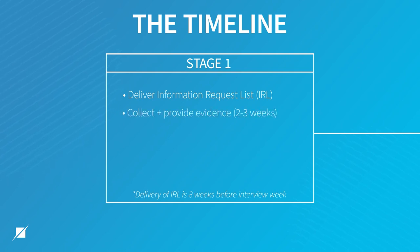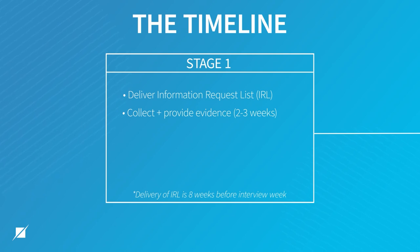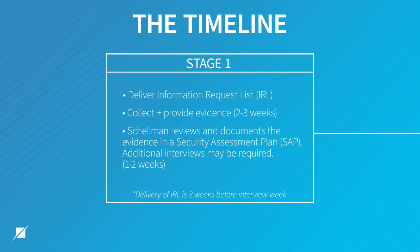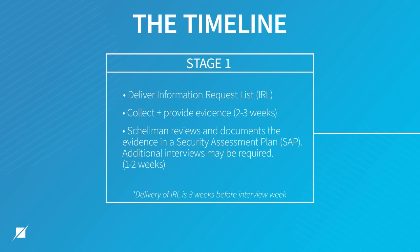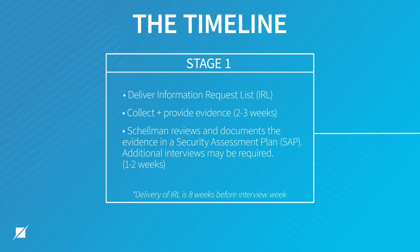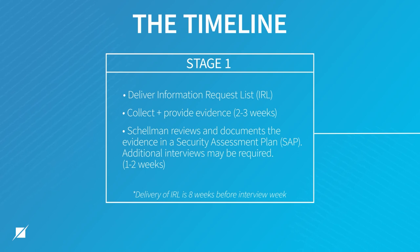There are a few other milestones that happen during stage one. You'll have a two to three week period to collect the evidence we're requesting for stage one and provide that to us. From there, we move into about one to two weeks of reviewing that documentation, documenting it in the security assessment plan or the SAP, and then providing that SAP to you. During that time, we may perform some interviews and authorization boundary reviews to make sure we understand the scope of your boundary and that we've requested the right information. Stage one focuses on policies, procedures, and all of the appendices or attachments of your system security plan.